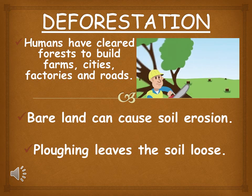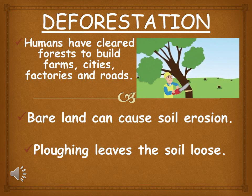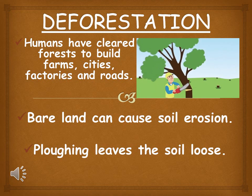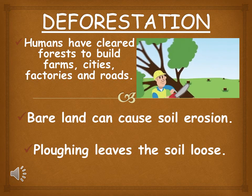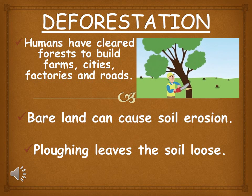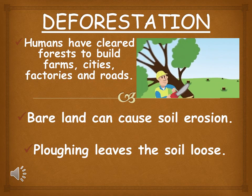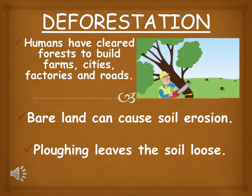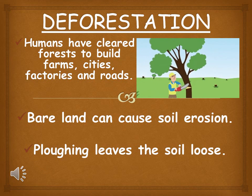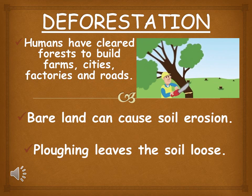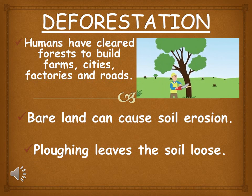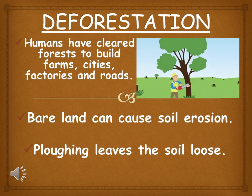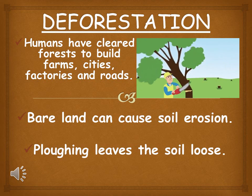Now let us see in detail the reasons for soil erosion. Humans have cleared forests to build farms, cities, factories, and roads, and for their requirements of wood. This leaves the land bare of vegetation and increases soil erosion. Ploughing also leaves the soil loose, which might lead to the soil being eroded easily.